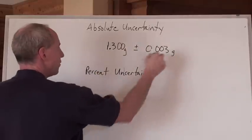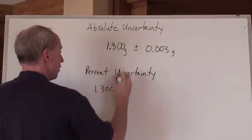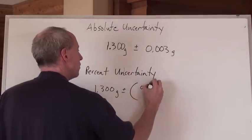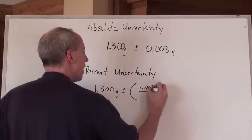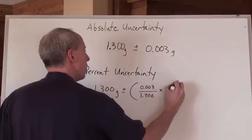So really, the uncertainty in percent would be written as 1.300 grams plus or minus, and the calculation is 0.003 divided by 1.300 times 100.